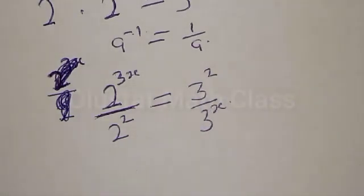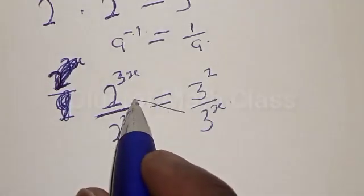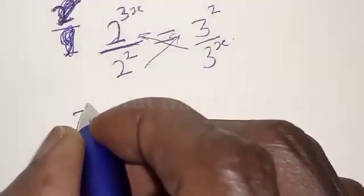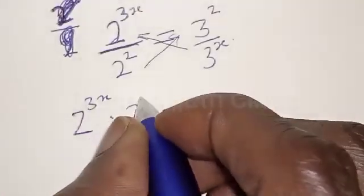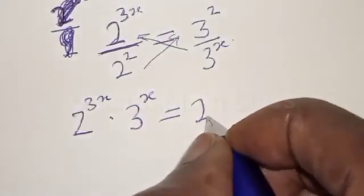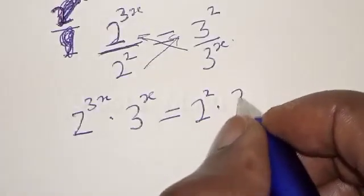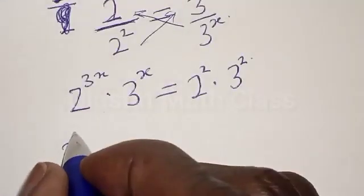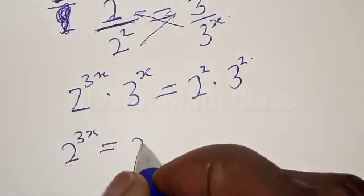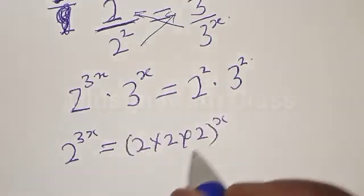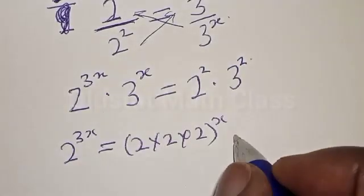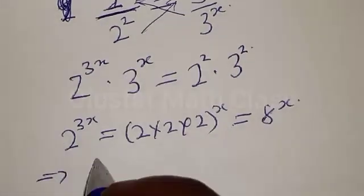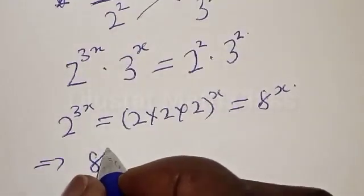Now let's cross multiply. We have 2 raised to power 3x multiplied by 3 raised to power x, equal to 2 raised to power 2 multiplied by 3 squared. Also remember, 2 raised to power 3x can be expressed as 2 times 2 times 2, raised to power x. Now 2 times 2 is 4, 4 times 2 is 8, which is equal to 8 raised to power x.